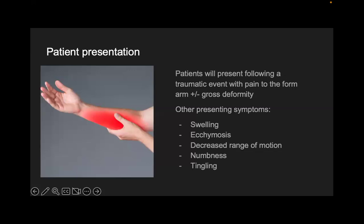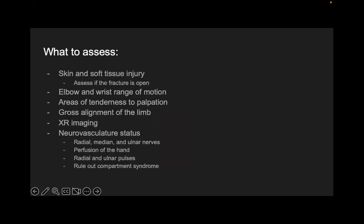You'll notice things off the bat without even talking to the patient — how they're holding their arm, whether they're able to move it, and what they're complaining of. Once you get the story, you need to think about what key pieces of information your attending will ask you. Number one thing you should always look for in any fracture — not just a forearm fracture — is whether the fracture is open or not. Did it break the skin?